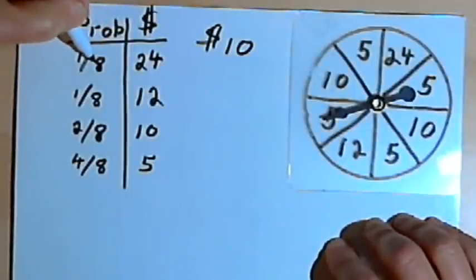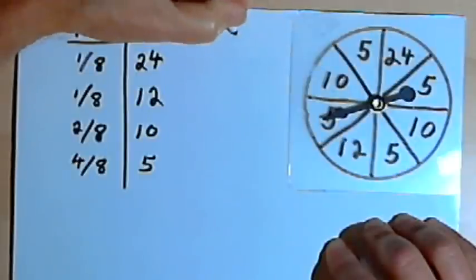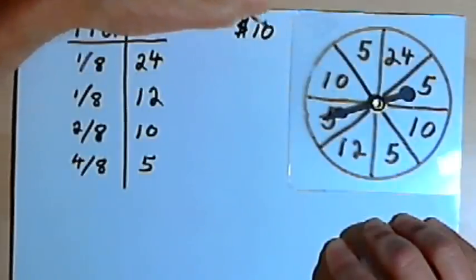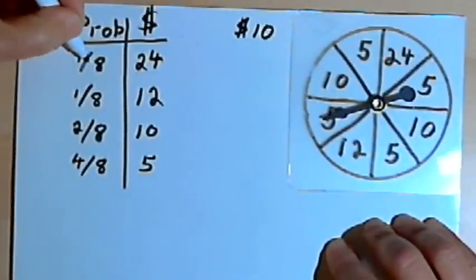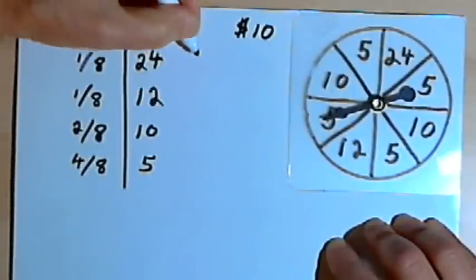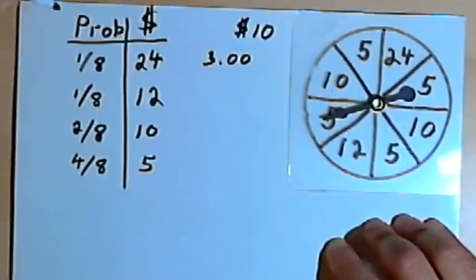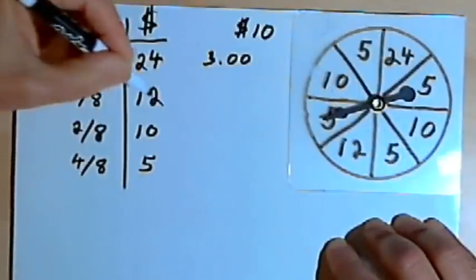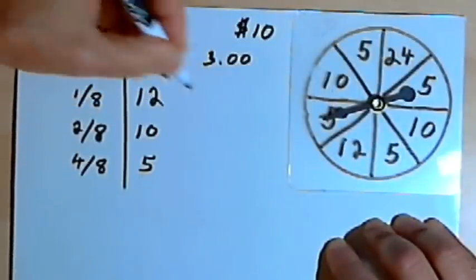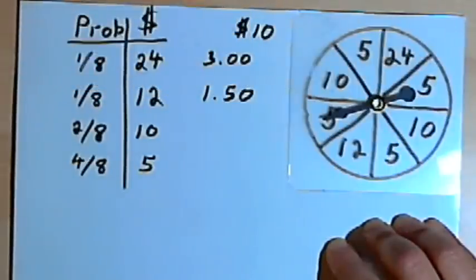One-eighth of the time, let me move this 10 dollars over, we want to make sure we remember that 10 dollars. One-eighth of the time you get back 24 dollars. So one-eighth times 24 is 3 dollars. And one-eighth of the time you get back 12 dollars. Well, one-eighth of 12 is a dollar fifty.